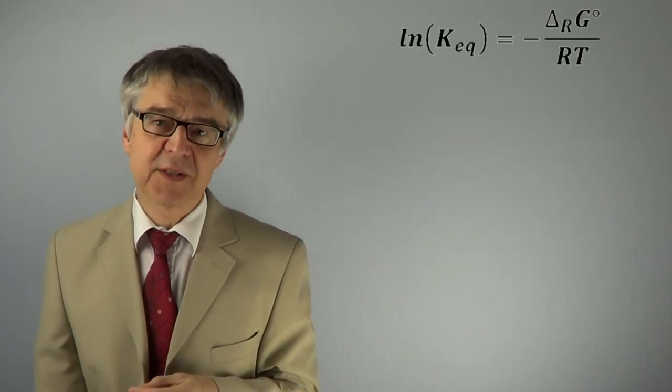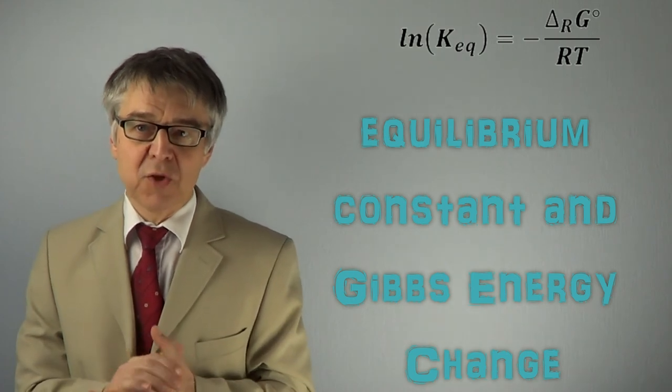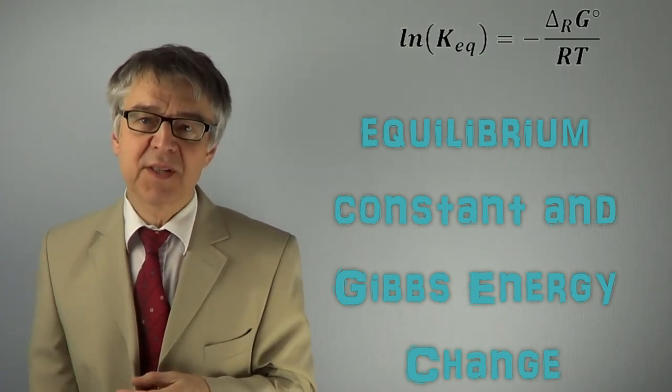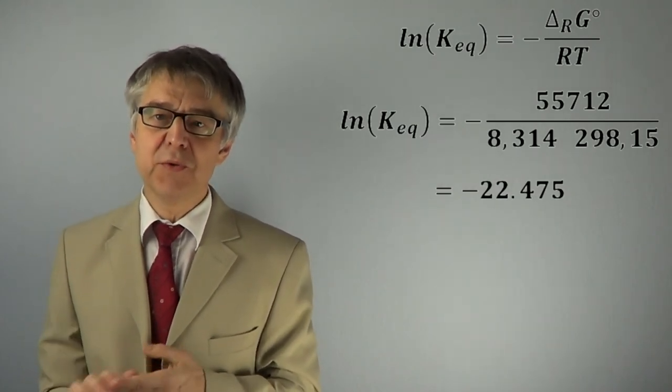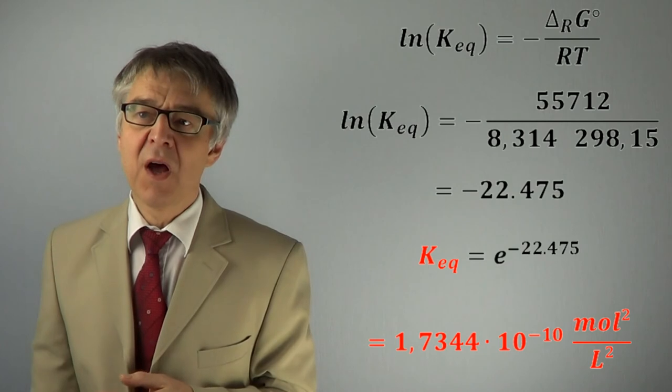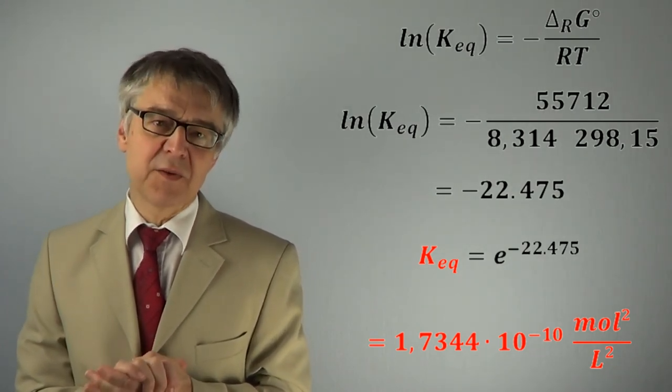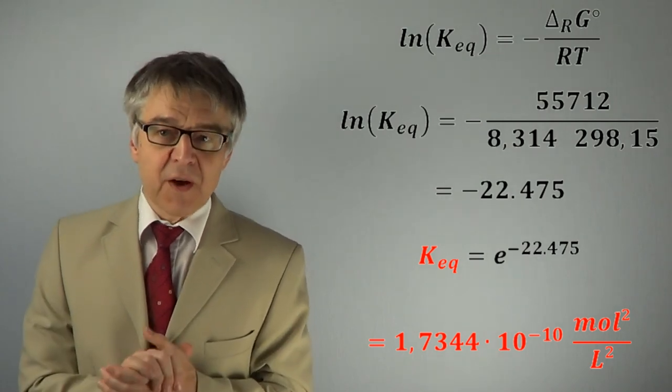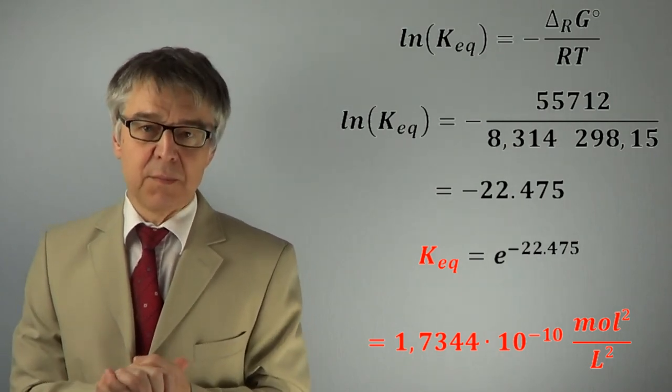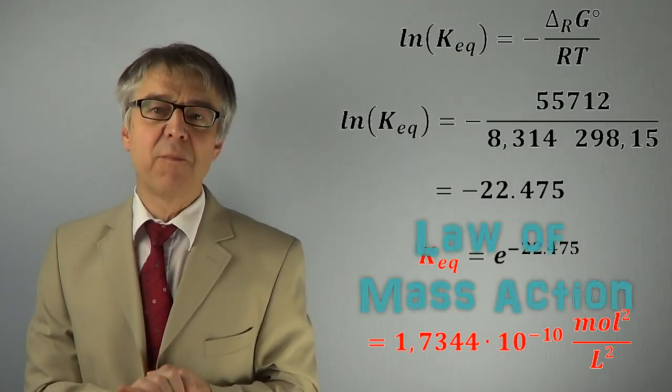To determine the exact value of the equilibrium constant, we may use this equation. The numerical value of the equilibrium constant is e to the negative 22.5, or 1.7 times 10 to the negative 10. The unit of the equilibrium constant, mole squared over liter squared, may be obtained by the law of mass action.